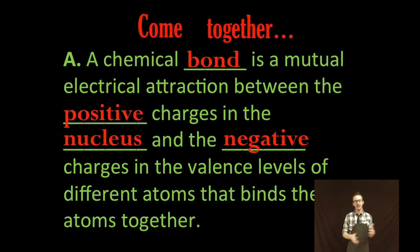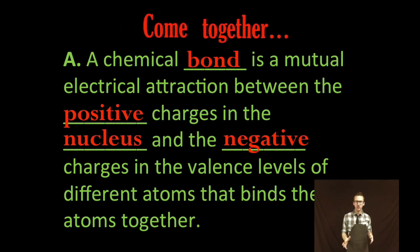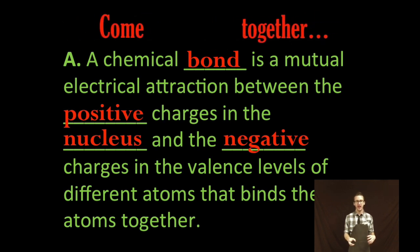Okay so first, what the heck is a chemical bond? It is just a mutual electrical attraction between the positive charges in the nucleus and the negative charges in the valence level of different atoms that binds the atoms together.